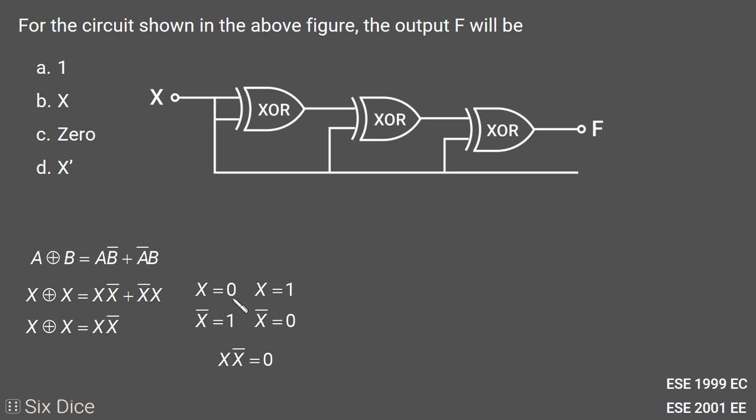If X takes value 0, then X̄ will take value 1, and if X takes value 1, then X̄ will take value 0. Both times the multiplication will result in 0, so X⊕X will always be 0. The output of the first XOR gate will be 0.